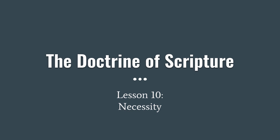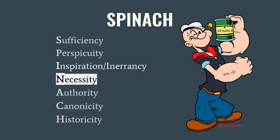We only have four lessons to go for the class. You can see that in our SPINACH acronym, we still have necessity, authority, canonicity, and historicity remaining.